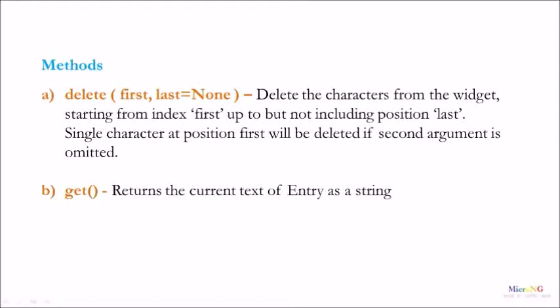It is used to delete a character from the widget starting from the index first up to but not including the position last. If we don't mention the second parameter, the last, a single character at position first will be deleted if the second argument is omitted.